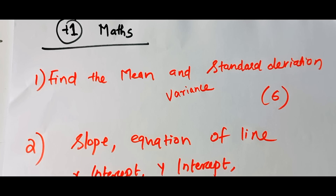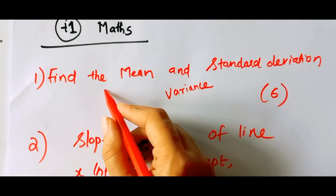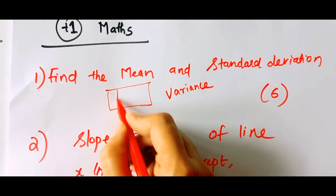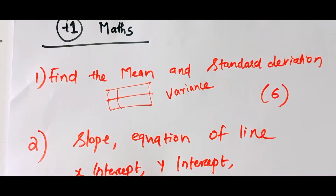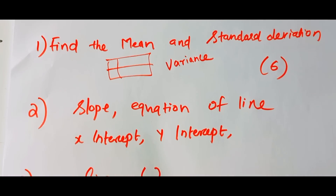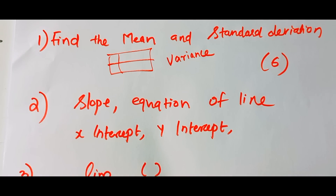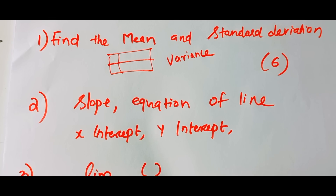Mean, Variance and Standard Deviation — you will be able to see that in a table. We will see the slope of straight lines. We will learn the slope of the line, equations of a line, x-intercept, and y-intercept.